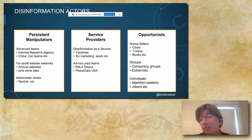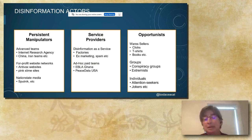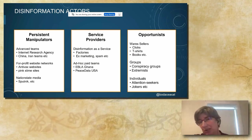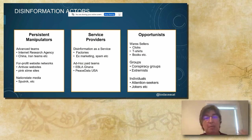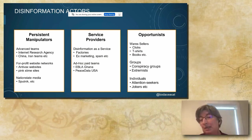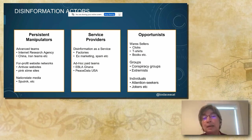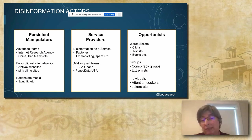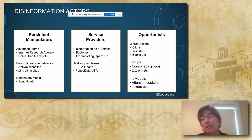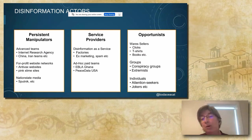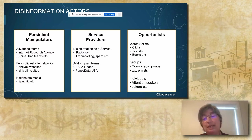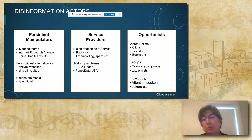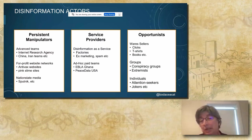We look at disinformation actors. We've divided them into the big persistent actors — the advanced persistent manipulators — the service providers. There's a growing industry for disinformation as a service. And then the one-off opportunists: people who are selling T-shirts on the back of a campaign, conspiracy groups, some of the attention-seeking individuals.